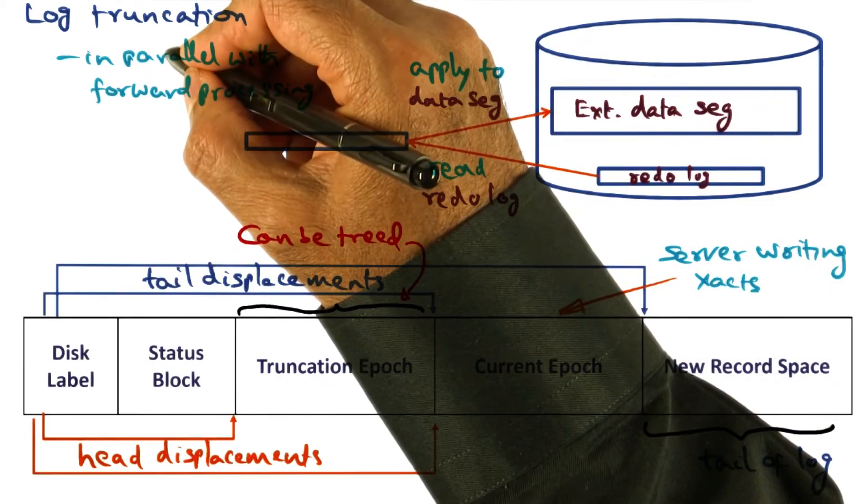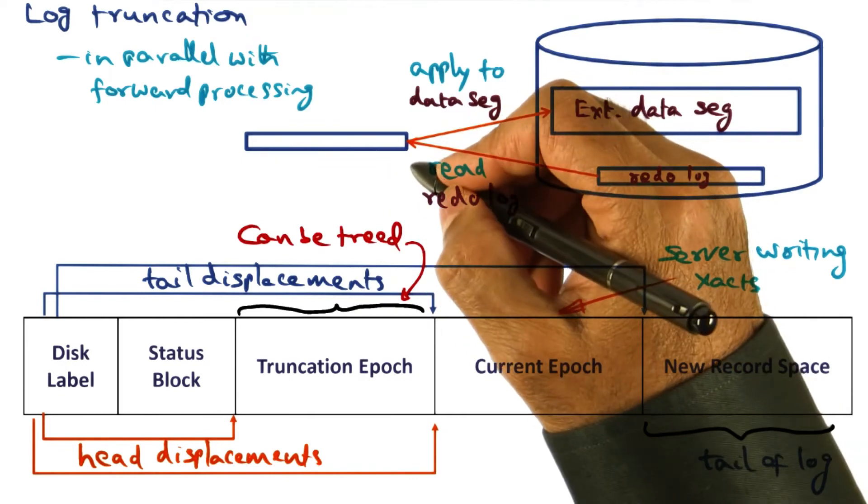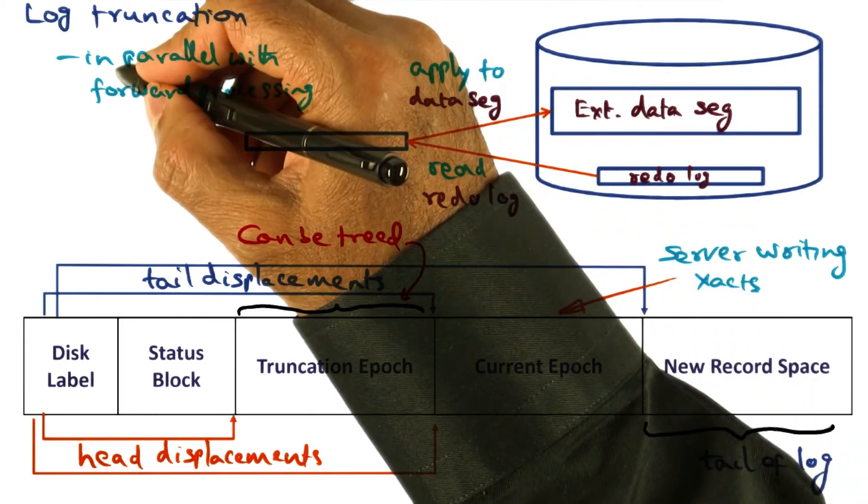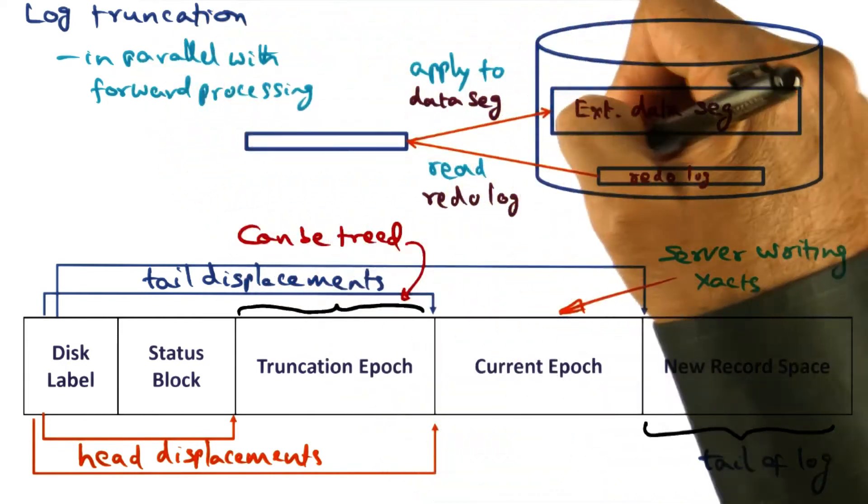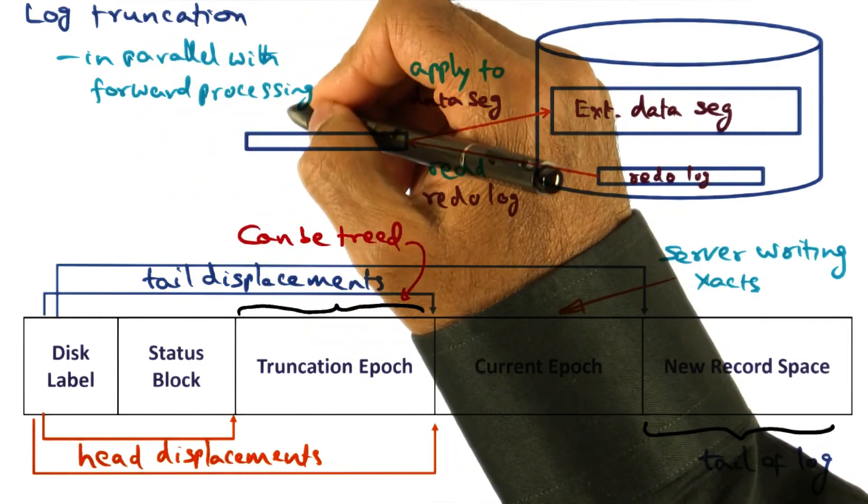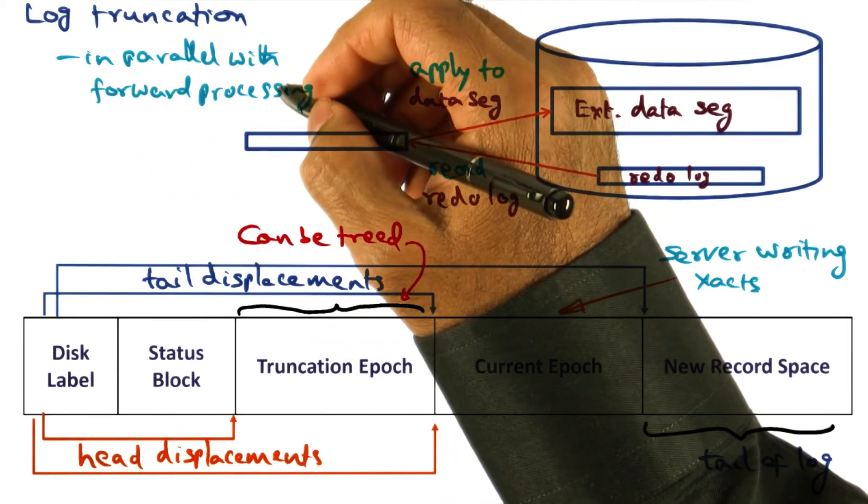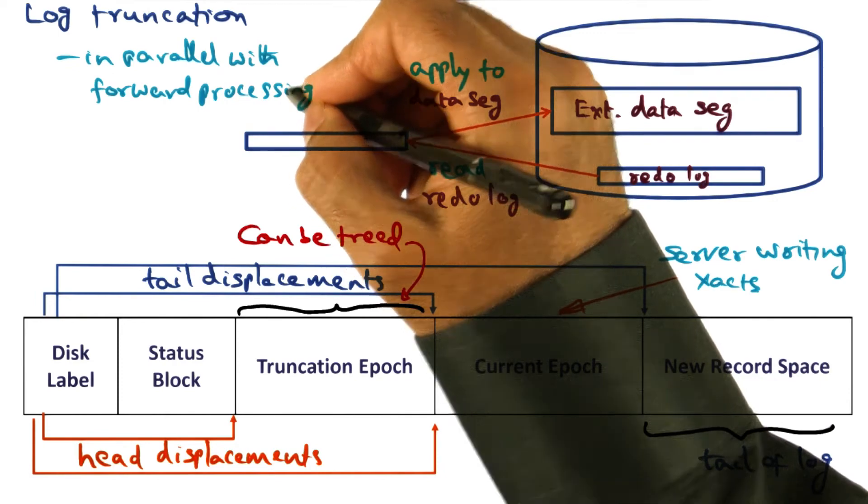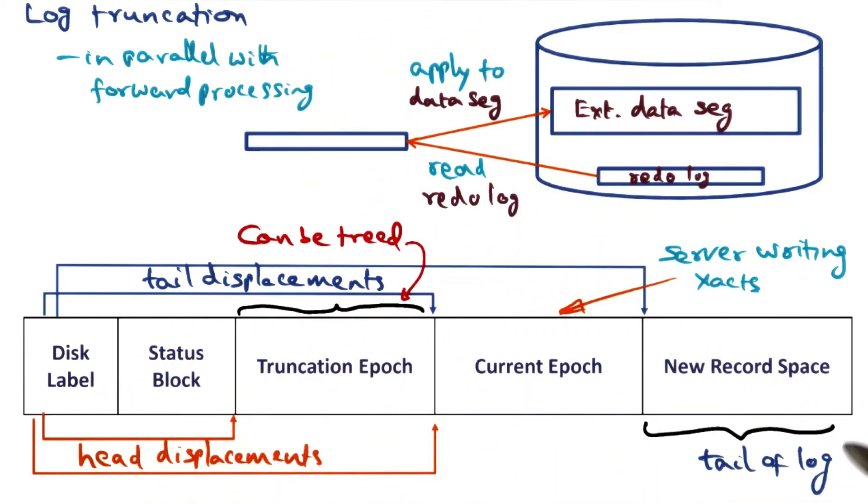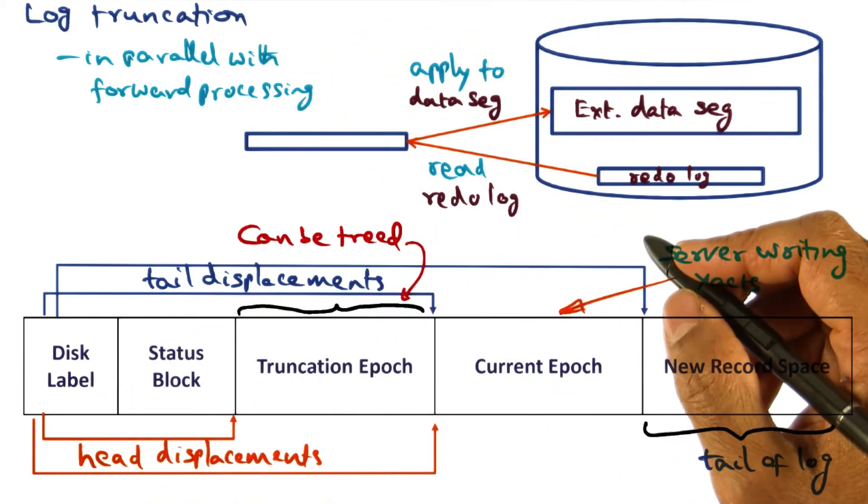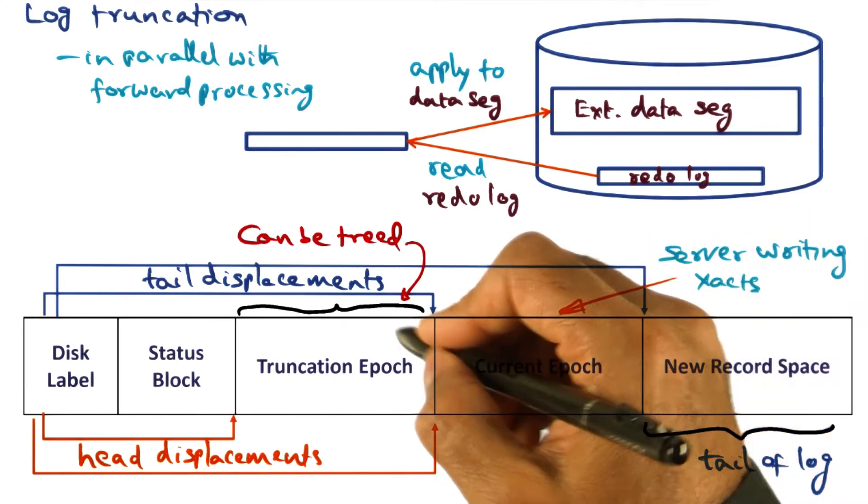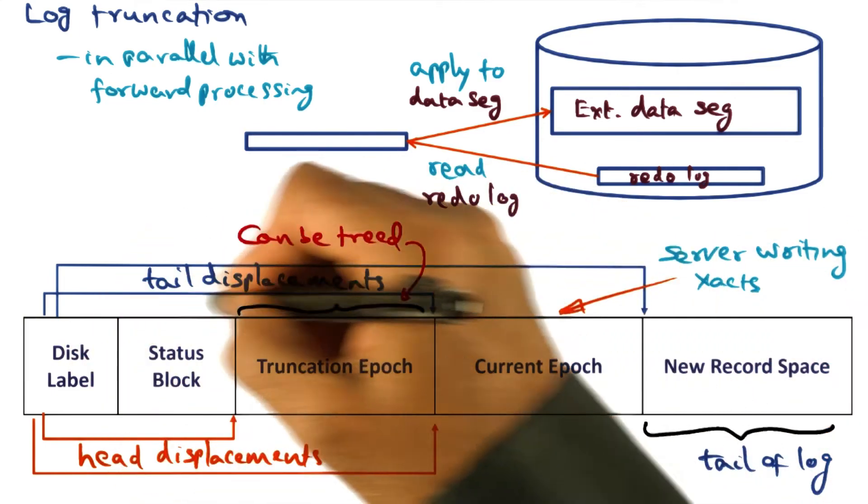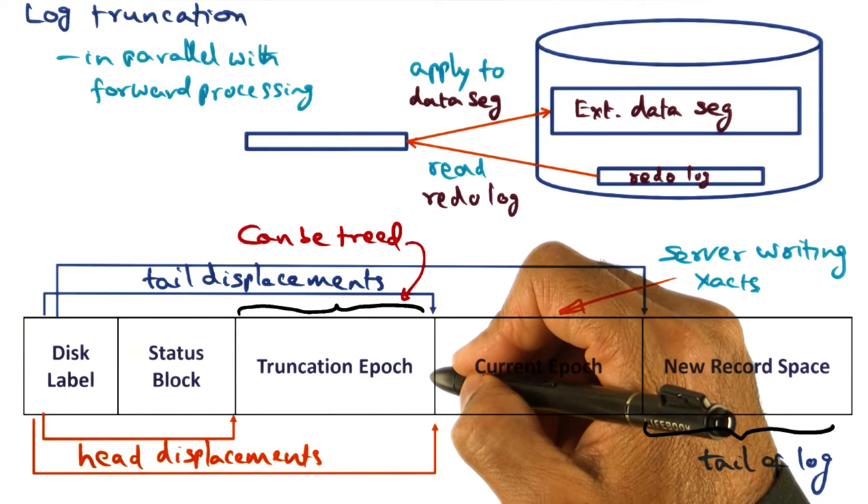Of course, we don't want to stop the world in order to do this log truncation. So what we want to do is we want to do the log truncation in parallel with forward processing by the application. And the way LRVM allows that to happen is it splits the log record into epochs.